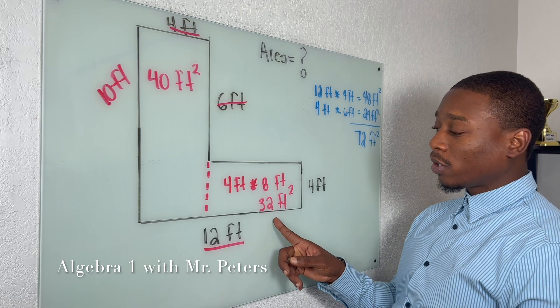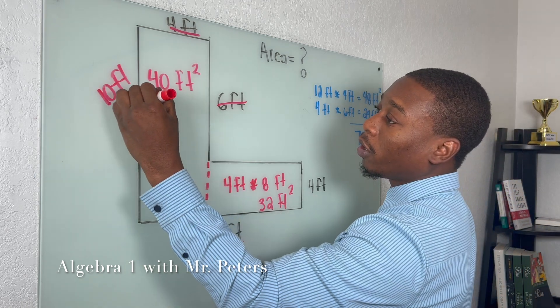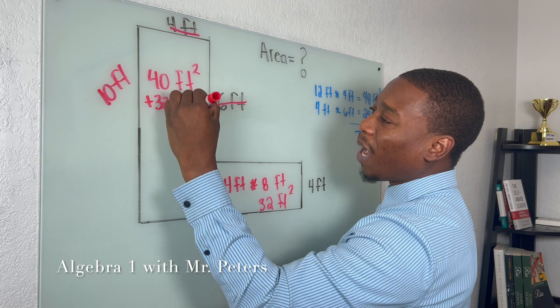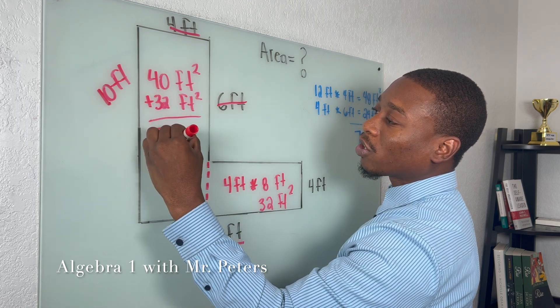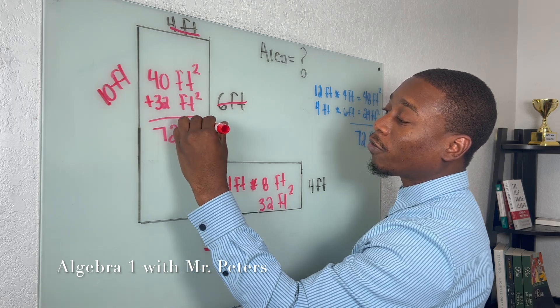Now when we take the areas, let's just add this over and I add the area for both of them. I'm going to get the same exact answer of 72 feet squared.